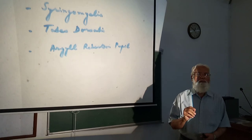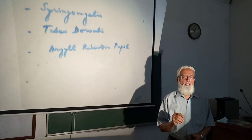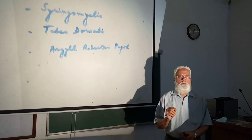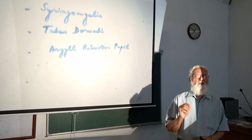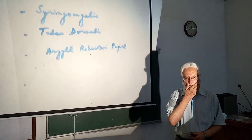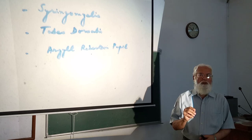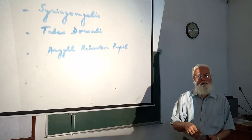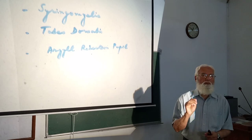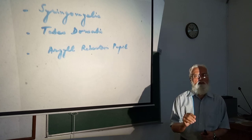This disease may also affect the brain stem, and when it does, it is called Syringobulia. In Syringobulia, due to excessive overgrowth of neuroglia tissue, there is damage to the spinothalamic canal.